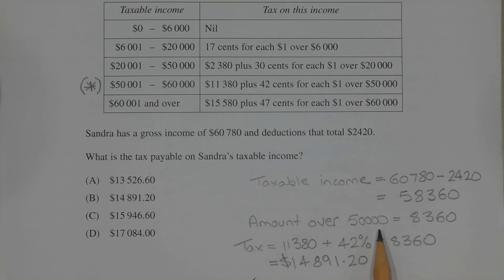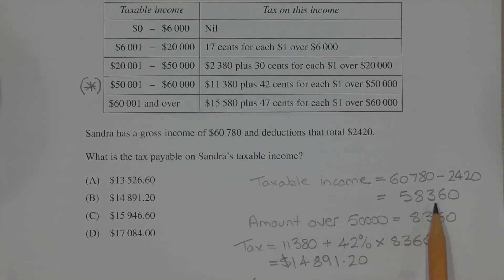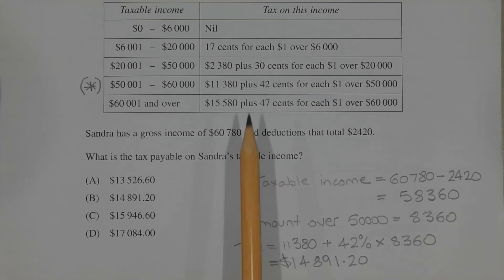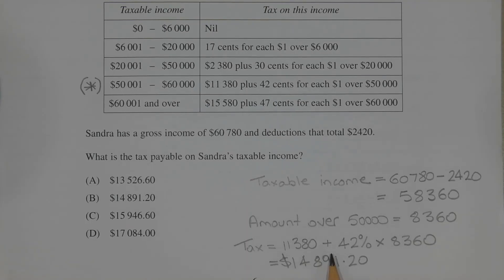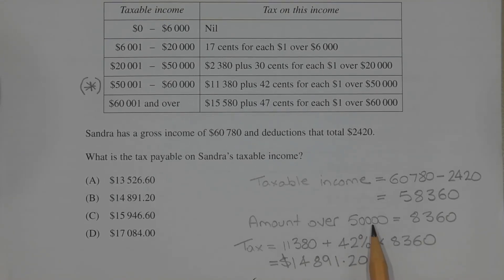The amount over $50,000 is worked out by subtracting $50,000 from $58,360, which is $8,360. So the tax is $11,380 plus $0.42 for each dollar — we interpret this as 42% of $8,360, which is the amount over $50,000. And that equals $14,891.20.